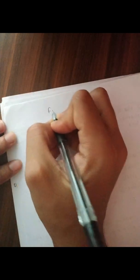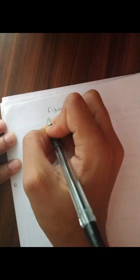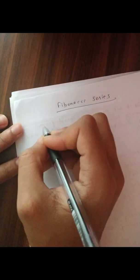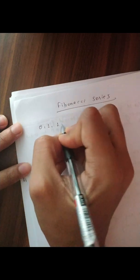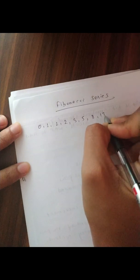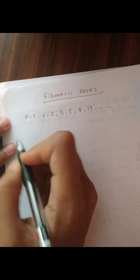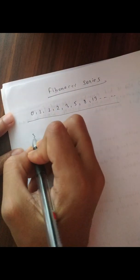Hello world. In today's video we'll be learning about the Fibonacci series in 8085 programming. We are all familiar with the Fibonacci series — it starts with 0, 1, and keeps adding the consecutive last two numbers: 1, 2, 3, 5, 8, 13, and so on. We'll be writing a program in 8085 to generate this series.